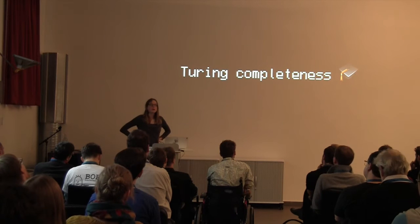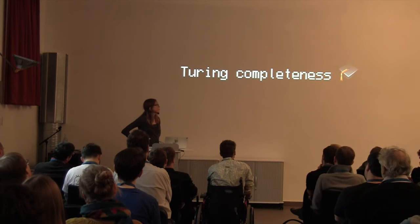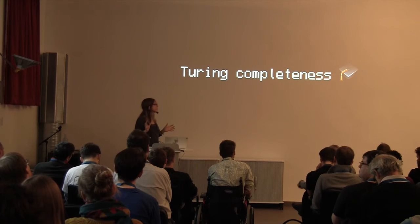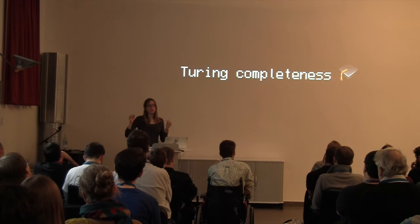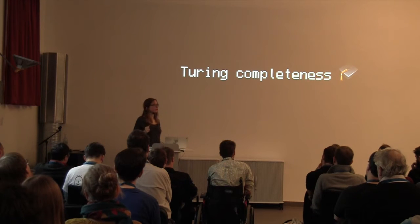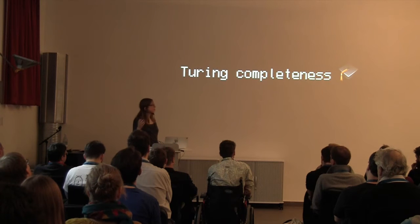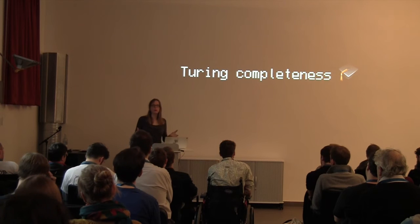General purpose languages are just that — general purpose — so you can use them for anything. If you don't want to decide what your language is going to be used for, you just have to make it Turing complete. That means it has to be able to execute a certain number of functions, including recursive functions. It's actually a fairly small subset — if your language can do those, then it's Turing complete, and you can theoretically do anything a computer can do.